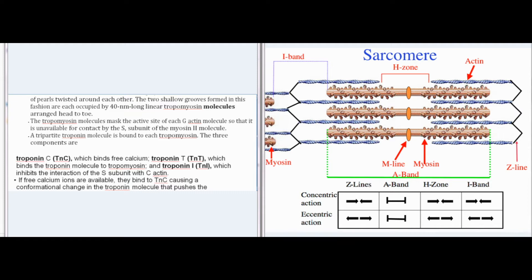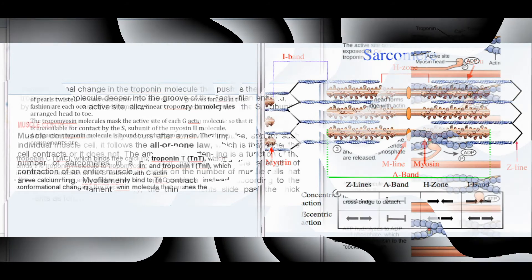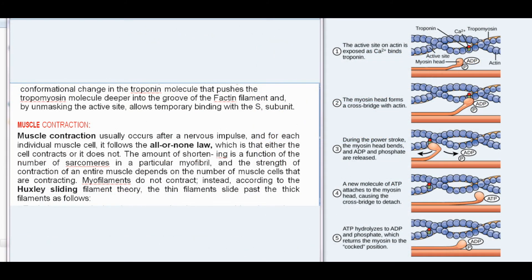A tripartite troponin molecule is bound to each tropomyosin. The three components are troponin C (TnC), which binds free calcium; troponin T (TnT), which binds the troponin molecule to tropomyosin; and troponin I (TnI), which inhibits the interaction of the S1 subunit with F-actin. If free calcium ions are available, they bind to TnC causing a conformational change in the troponin molecule that pushes the tropomyosin molecule deeper into the groove of the F-actin filament and, by unmasking the active site, allows temporary binding with the S1 subunit.